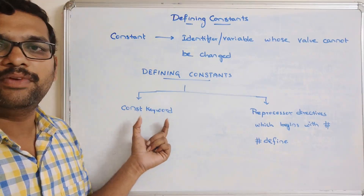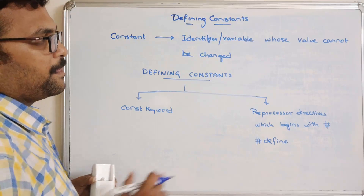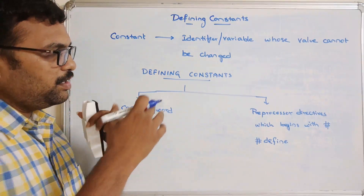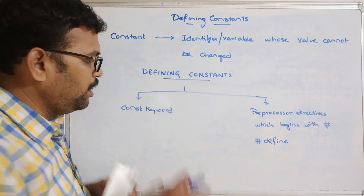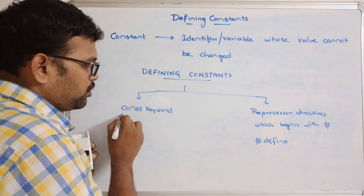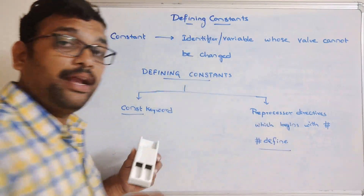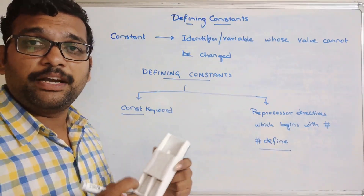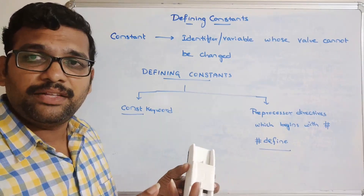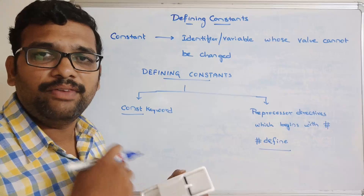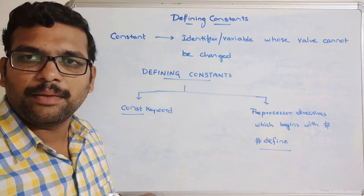We can use both the const keyword and #define to work with constants. Now I will show this in the compiler — how to define a constant using const keyword and using #define, and whether we can change the value of a constant or not.